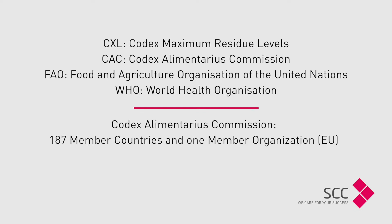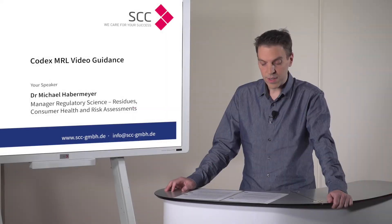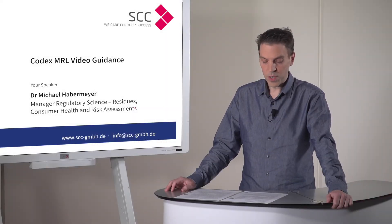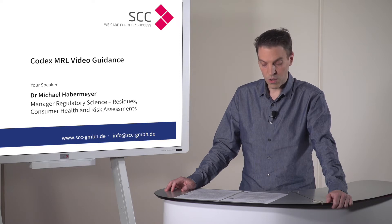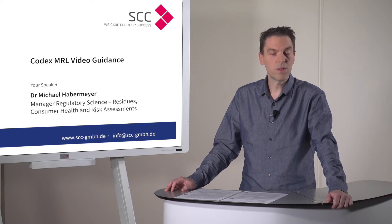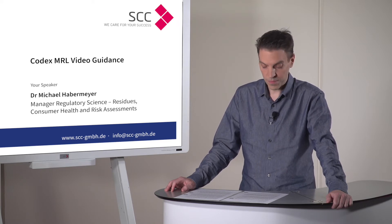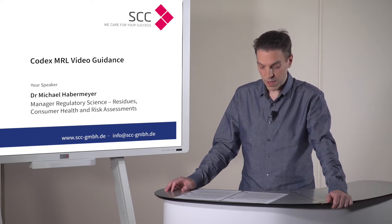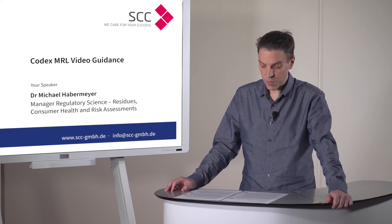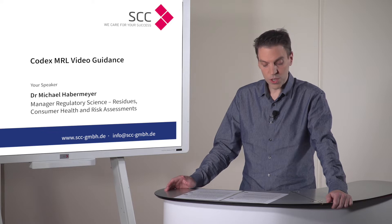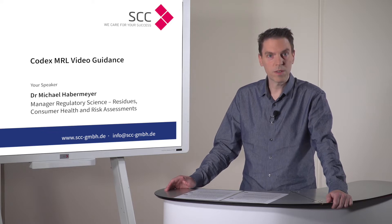The Codex Alimentarius Commission currently consists of 187 member states and one member organization, the European Union. The standards adopted by Codex aim at protecting consumers' health and also ensuring fair practices in food trade. One Codex standard is related to residues of pesticides in food and feed items that move in international trade: the Codex MLs.